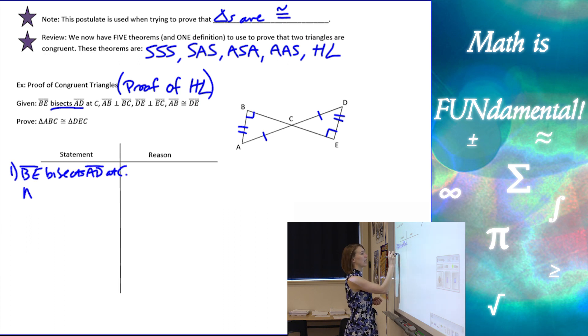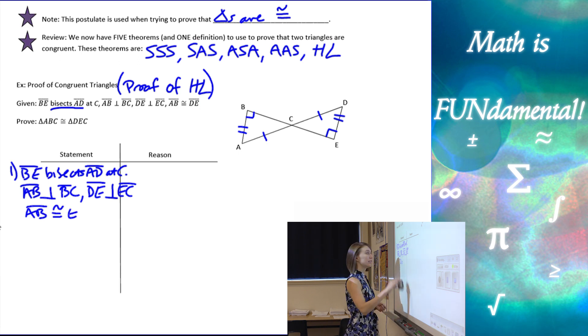We know that AB, segment AB, is perpendicular to BC. We know that segment DE is perpendicular to EC, and we know that AB is congruent to DE. And our reasons are given.